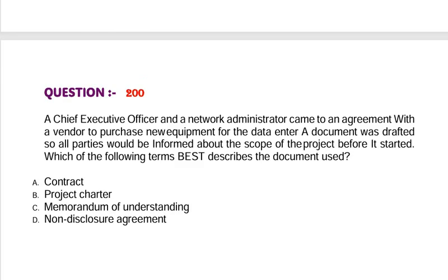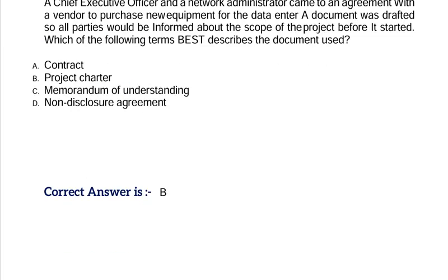Question: A chief executive officer and a network administrator came to an agreement with a vendor to purchase new equipment for the data center. A document was drafted so all parties would be informed about the scope of the project before it started. Which of the following terms best describes the document used? Option A, contract. Option B, project charter. Option C, memorandum of understanding. Option D, non-disclosure agreement. Correct answer is Option B.